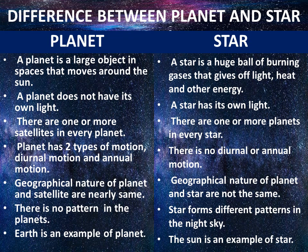Now the difference between planet and star. First difference: A planet is a large object in space that moves around the sun. A star is a huge ball of burning gases that gives off light, heat, and other energy. Second difference: A planet does not have its own light, but a star has its own light.